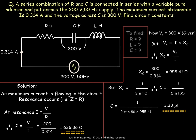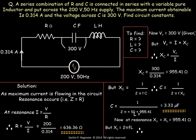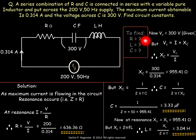At the time of resonance, XL equals XC. We already have XC = 955.41 ohm, so XL = 955.41 ohm as well. Using XL = 2πFL, we get L = XL / (2πF) = 955.41 / (2π × 50) = 3.04 Henry. So we have found all three circuit constants: R = 636.36 ohm, C = 3.33 microfarad, and L = 3.04 Henry.